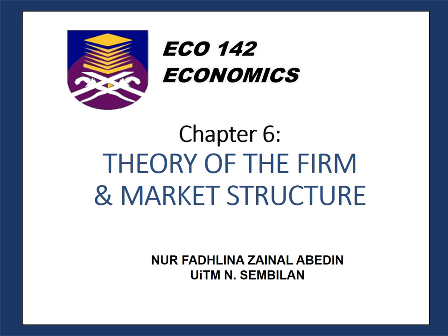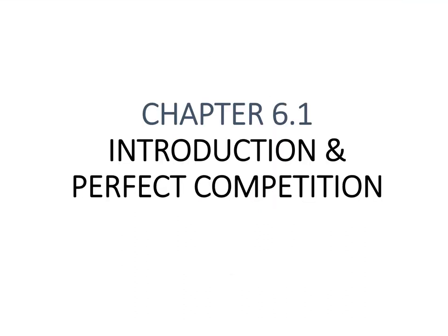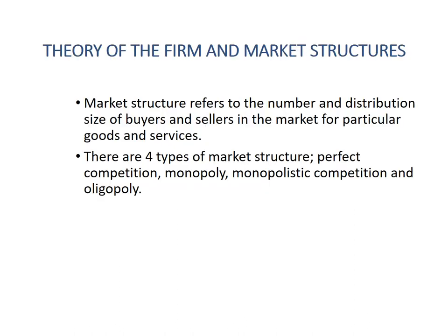Chapter 6: Theory of the Firm and Market. Chapter 6.1 covers Introduction and Perfect Competition in this video. Chapter 6.2, in another video, covers monopoly, oligopoly, and monopolistic competition. Market structure refers to the number and distribution size of buyers and sellers in the market for particular goods and services. There are four types of market structure: perfect competition, monopoly, monopolistic competition, and oligopoly.